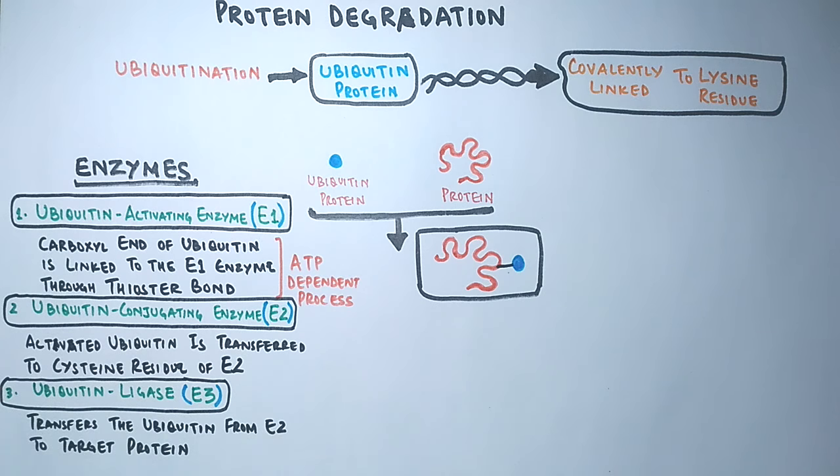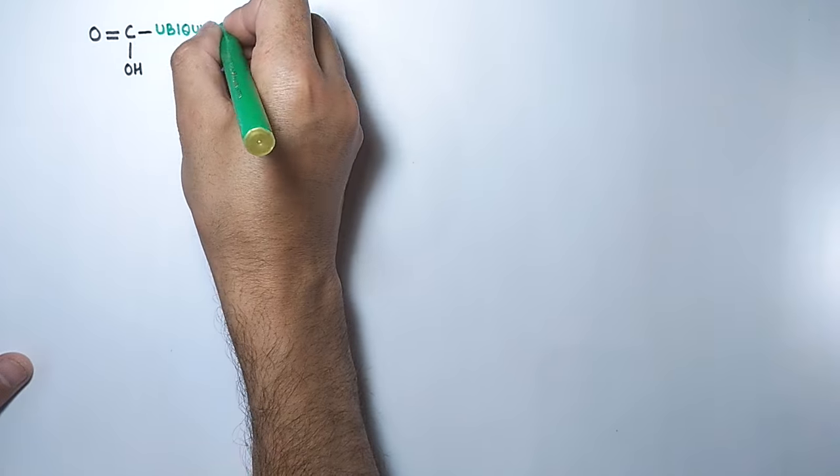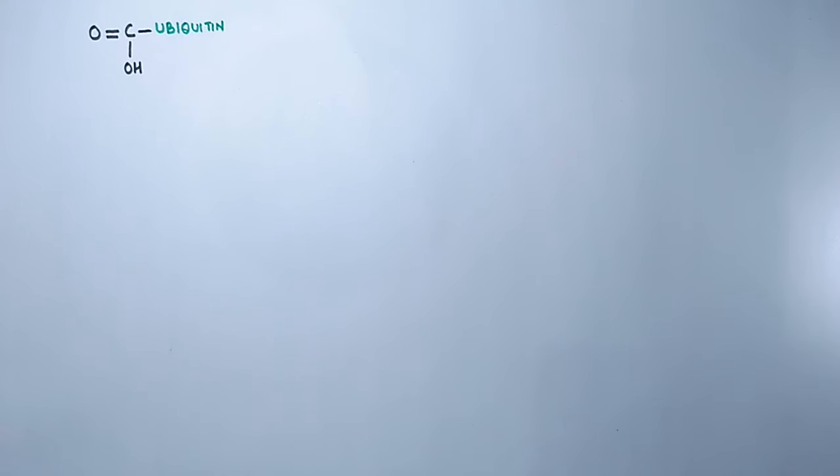Now let's see the mechanism of ubiquitination process in detail. The structure of ubiquitin protein is shown in the diagram where we see ubiquitin attached to a carboxyl end.